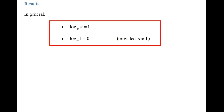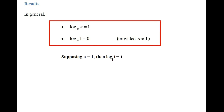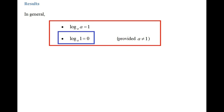Here are a couple of results. The first one: log of a to the base of a is 1. The second one: log of 1 to the base of a is 0, provided that a is not equal to 1. If a is 1, then log of 1 to the base of 1 will be 1 according to the first result, so log of 1 to the base of a is only 0 if a is not equal to 1.